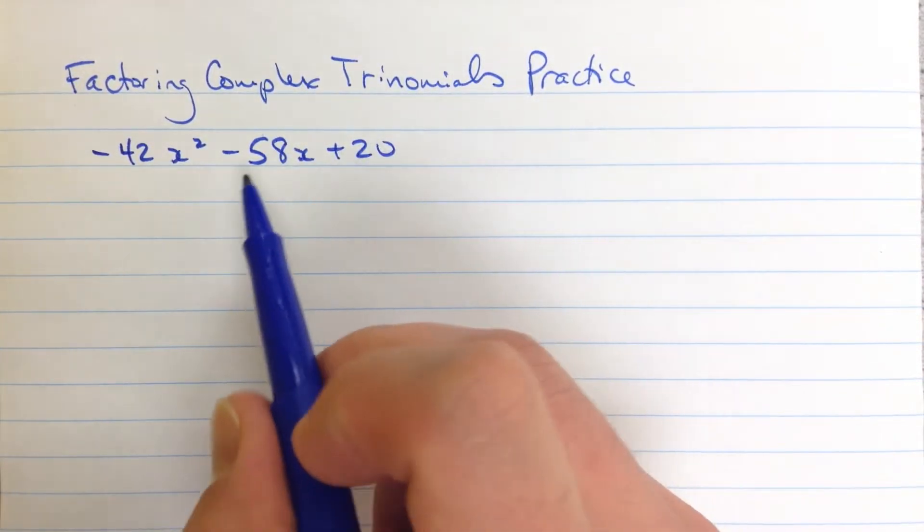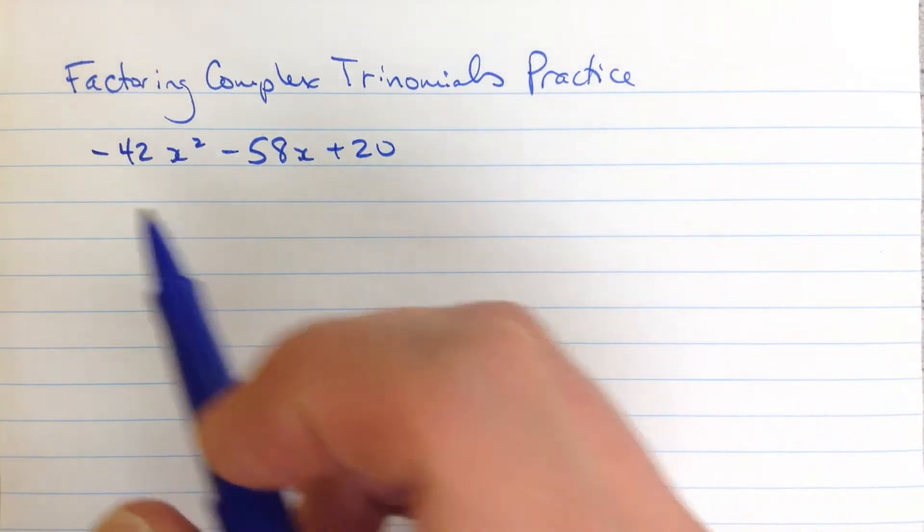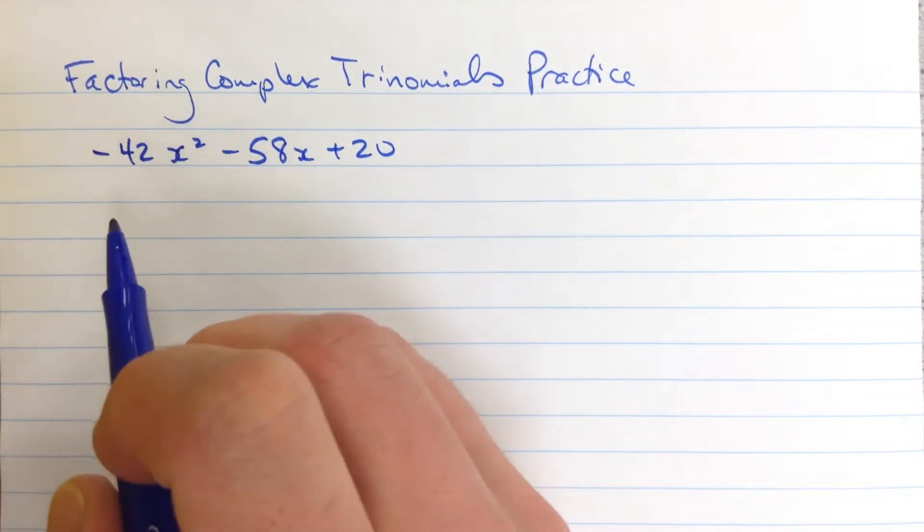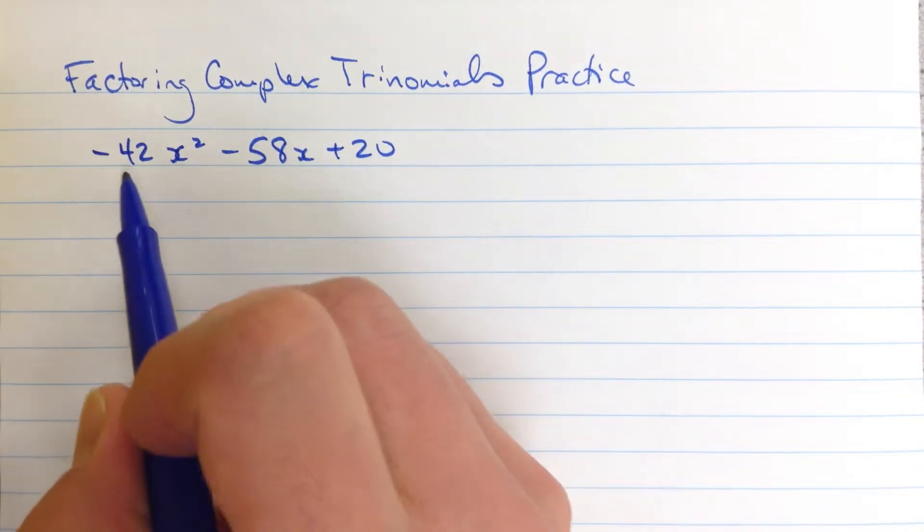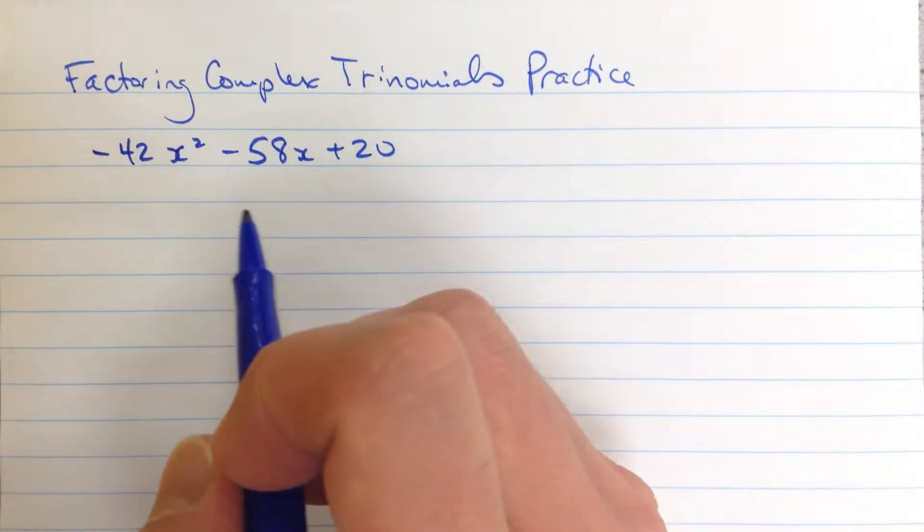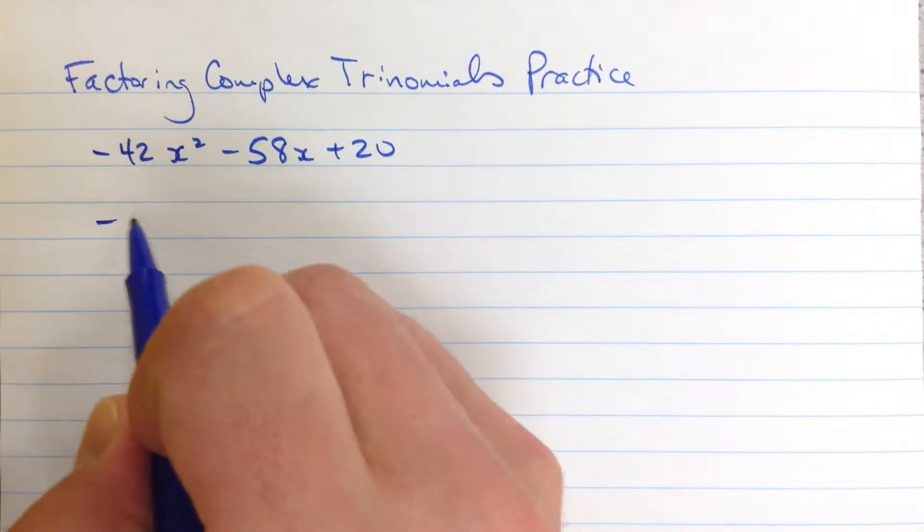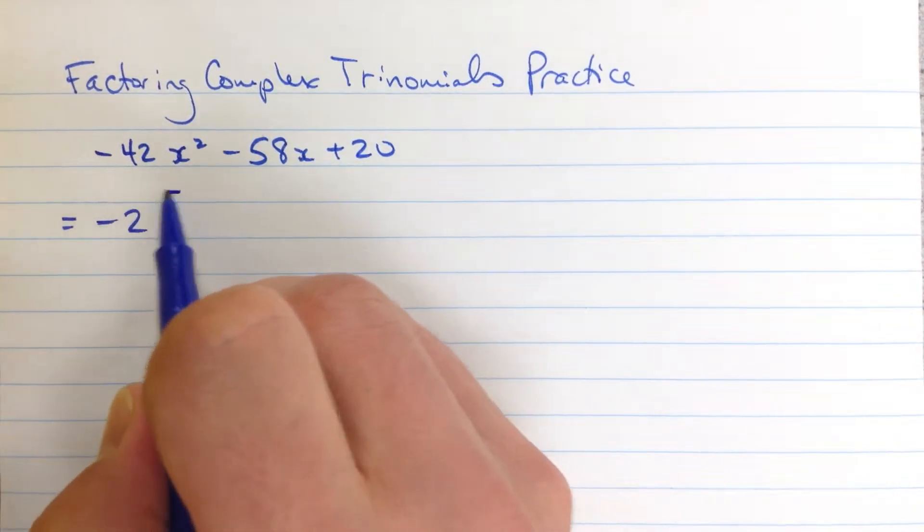So -42x² - 58x + 20. First thing to look for, always look for a common factor. I also see that this one starts with a negative value, a negative coefficient in front of the x² term. It's nice to clear that negative out, and I also see that each one of these is divisible by 2, but not divisible by anything else. So I'm going to divide out a negative 2, factor that out from each term.